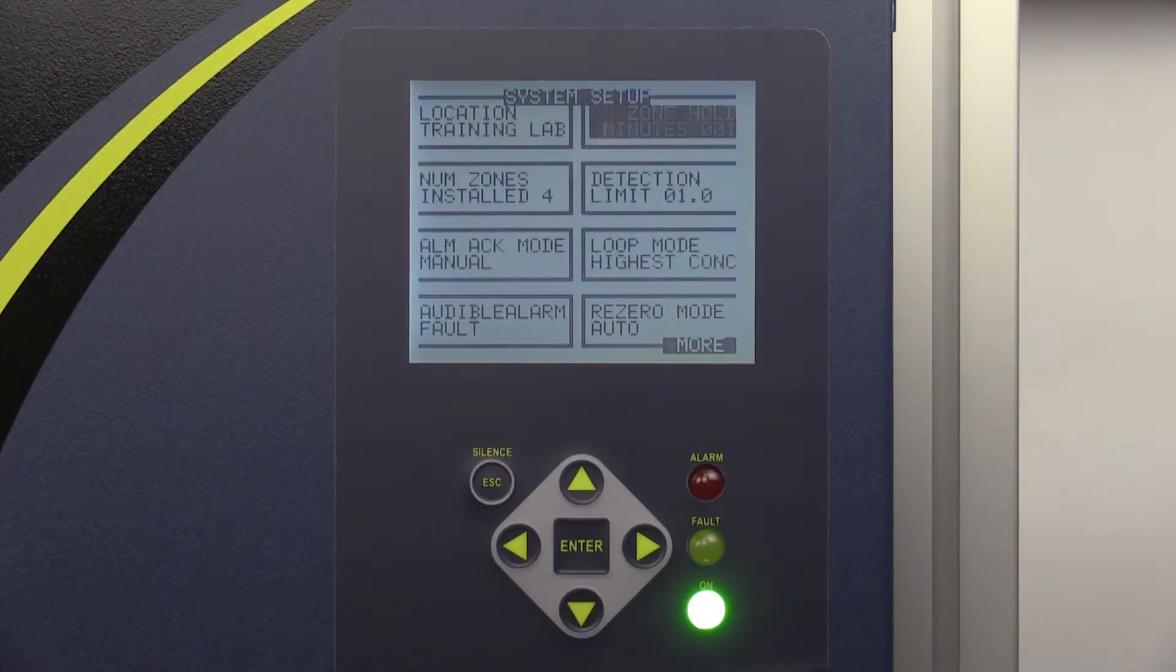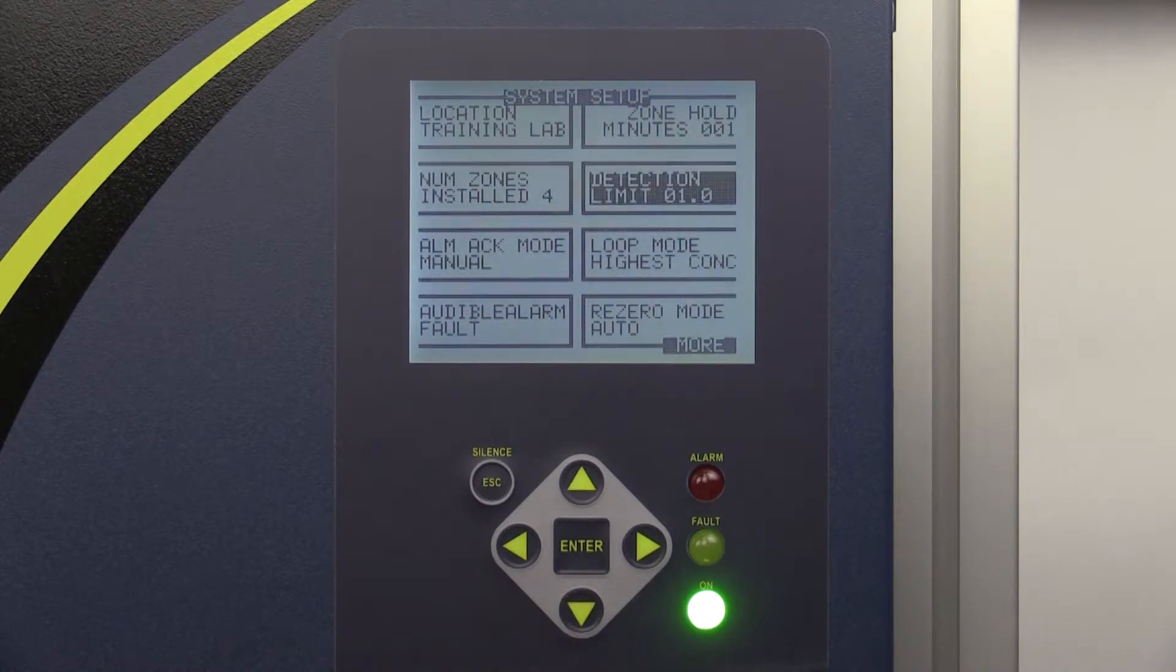The detection limit tab allows you to set the minimum PPM reading that will be registered on the display. It can be set between 1 and 99 PPM. Any PPM reading below the designated value will be interpreted and displayed by the monitor as 0.